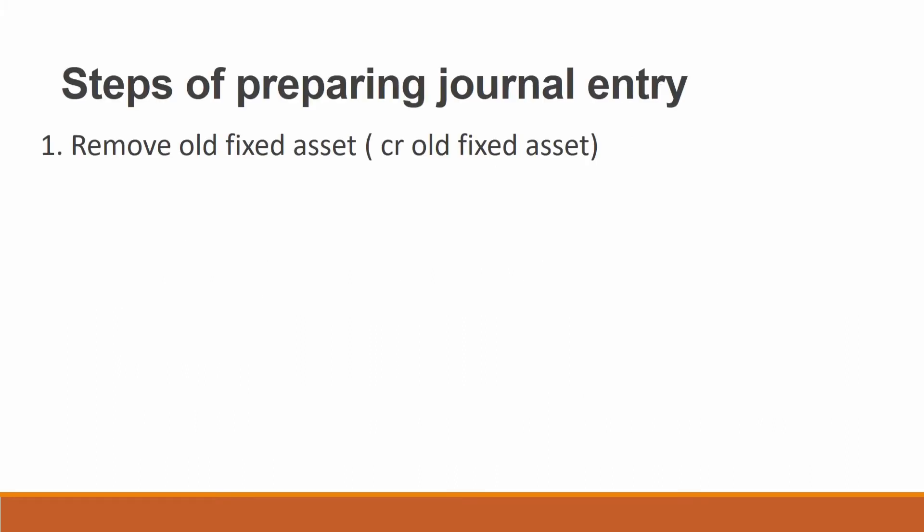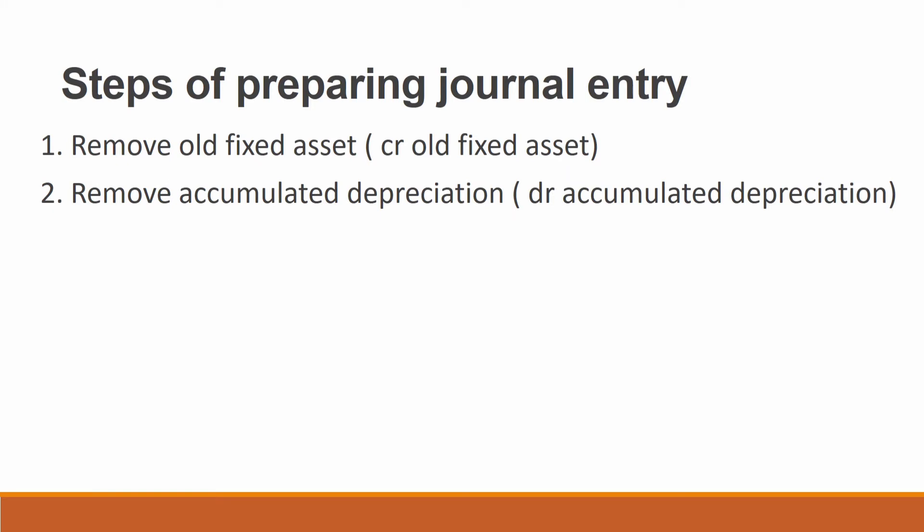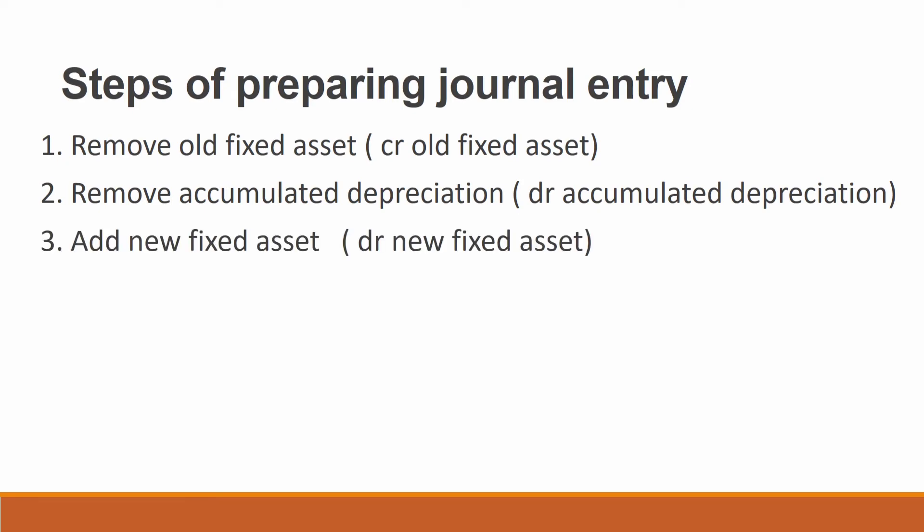There are a few steps for preparing the journal entry at the date of disposal. First, we must remove the old fixed asset — credit old fixed asset. Second, we must remove accumulated depreciation of the old fixed asset — debit accumulated depreciation. Third, we must add the new fixed asset — debit new fixed asset in the journal entry.